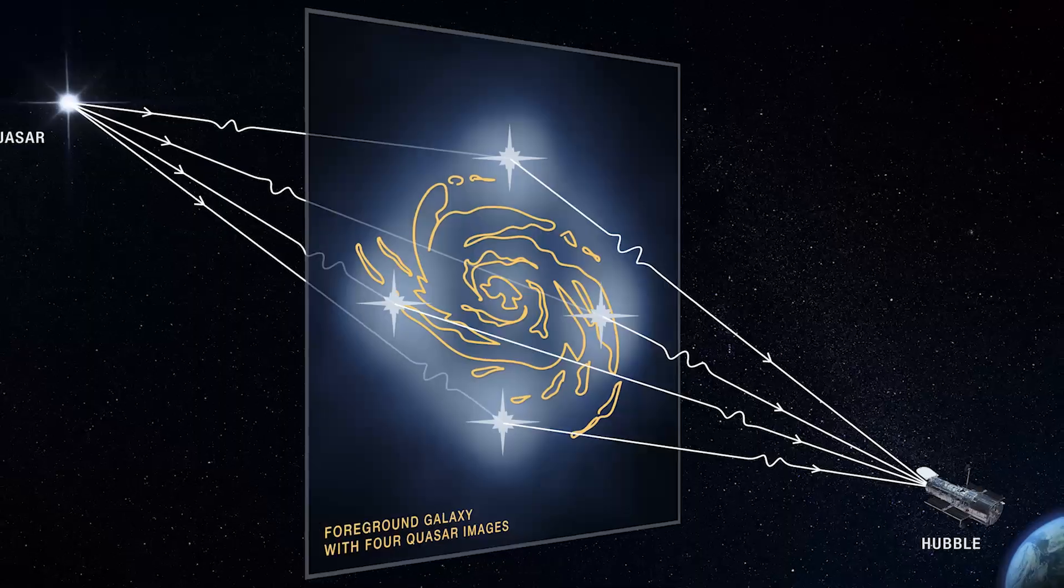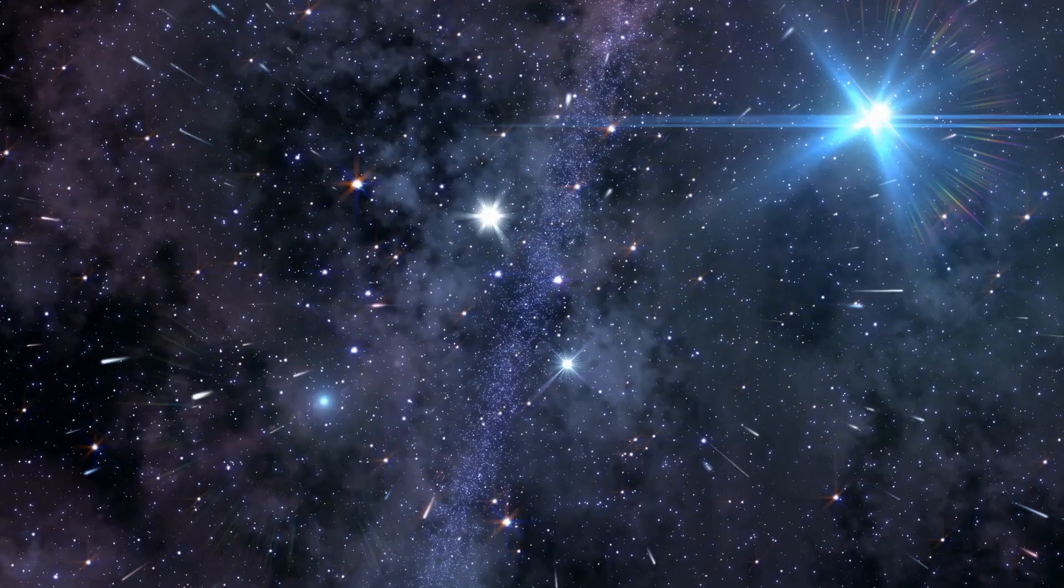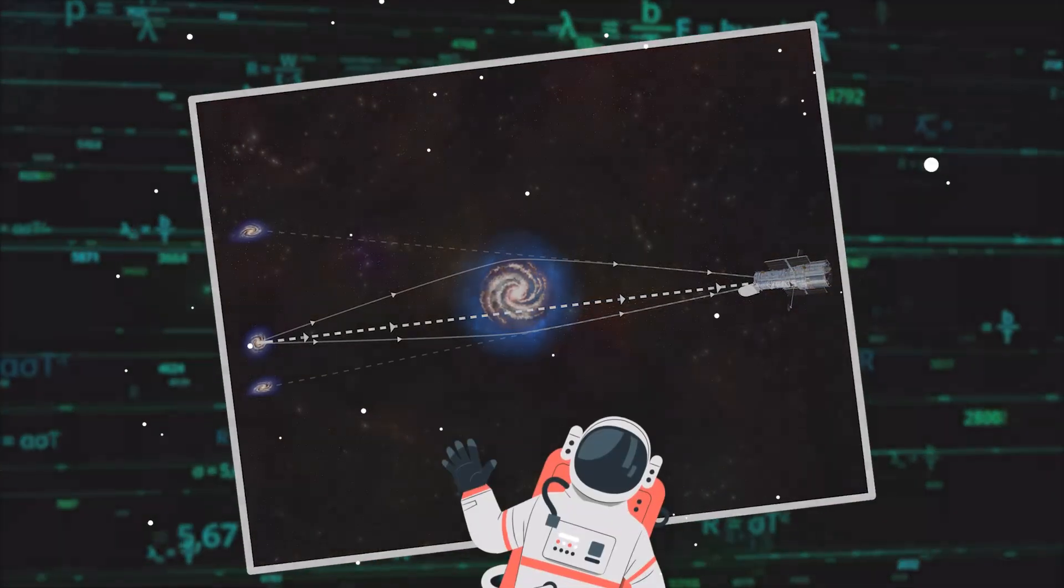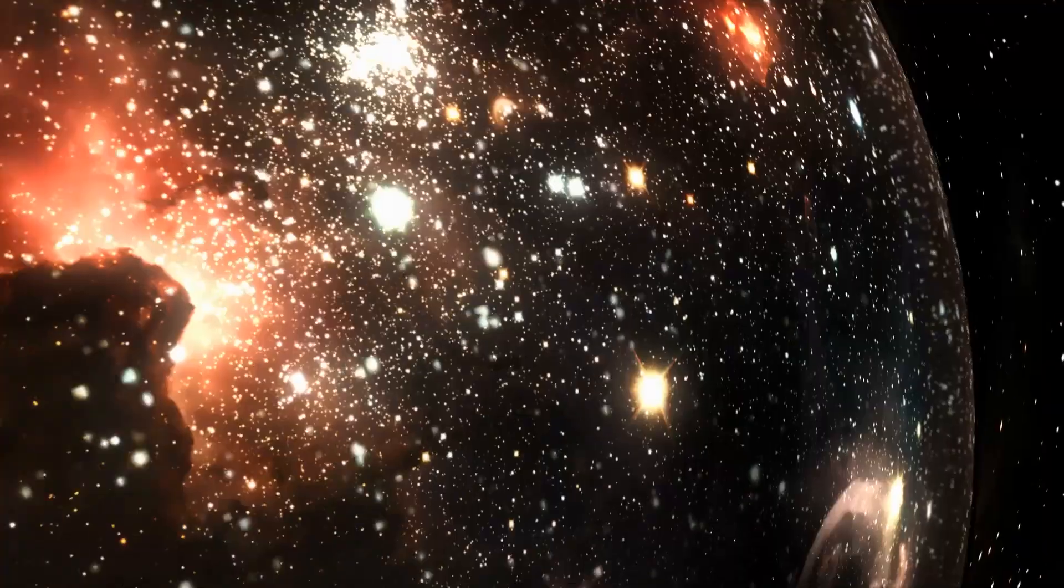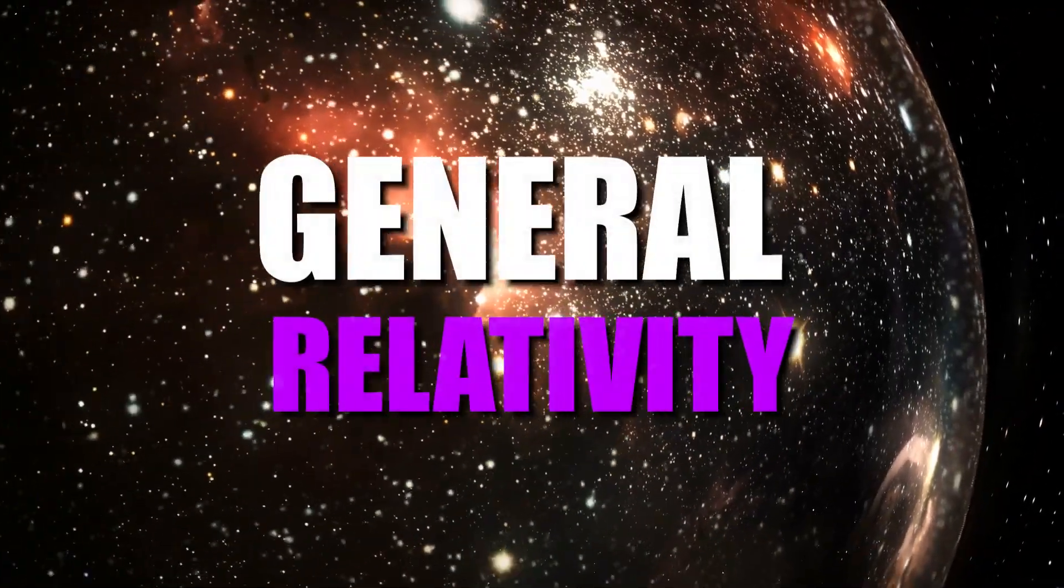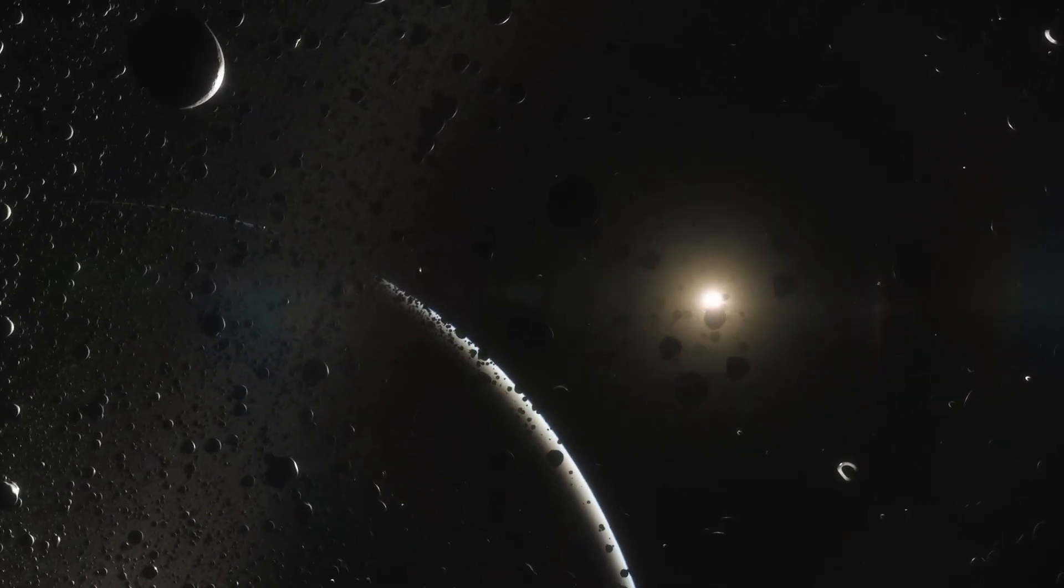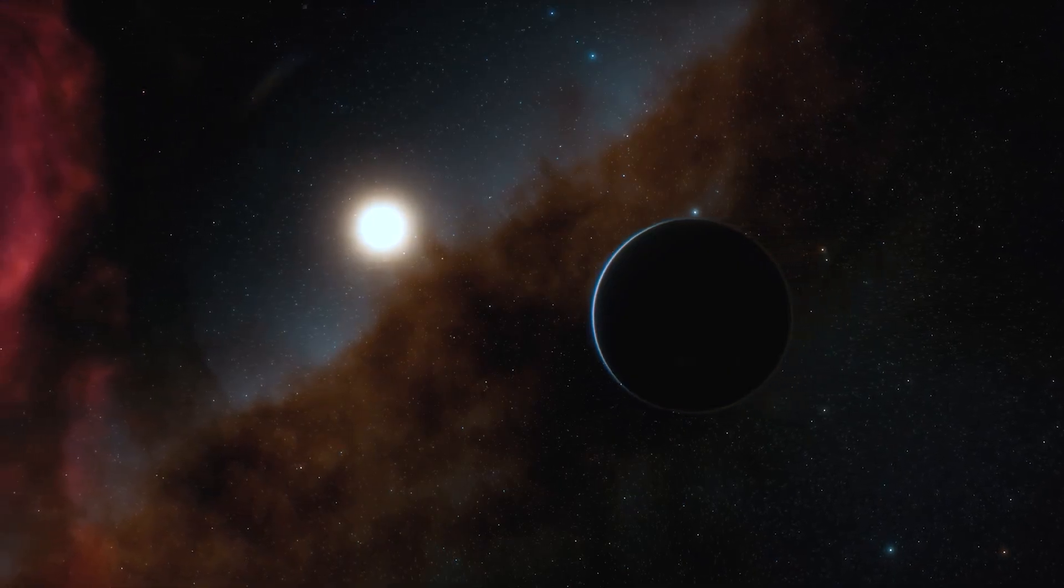This phenomenon, where light bends around massive objects, is known as gravitational lensing. It has been observed in many instances, such as light from distant stars curving around massive galaxies or galaxy clusters. Gravitational lensing serves as one of the key pieces of observational evidence supporting general relativity. It demonstrates that the path of light can indeed be altered by the presence of mass, even though the light itself has no rest mass.